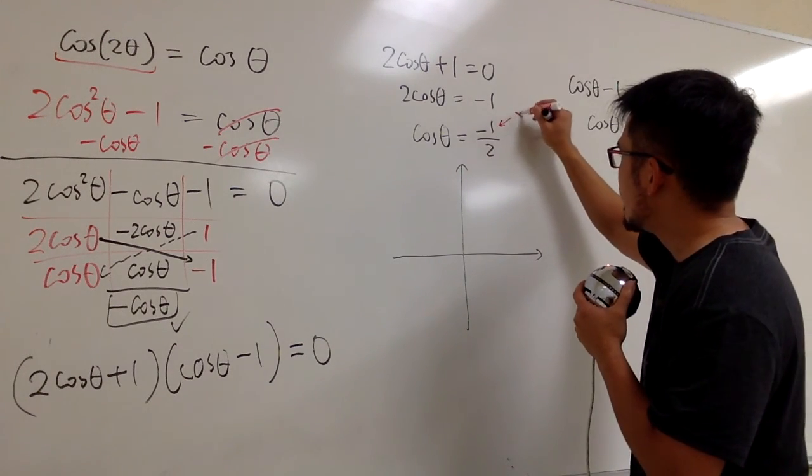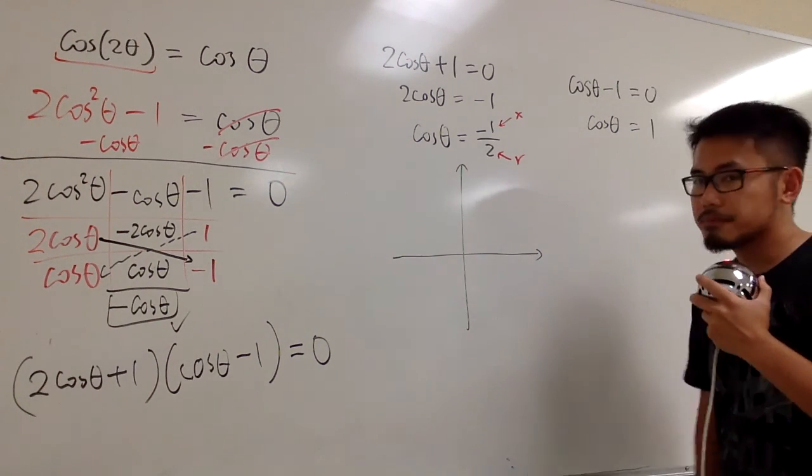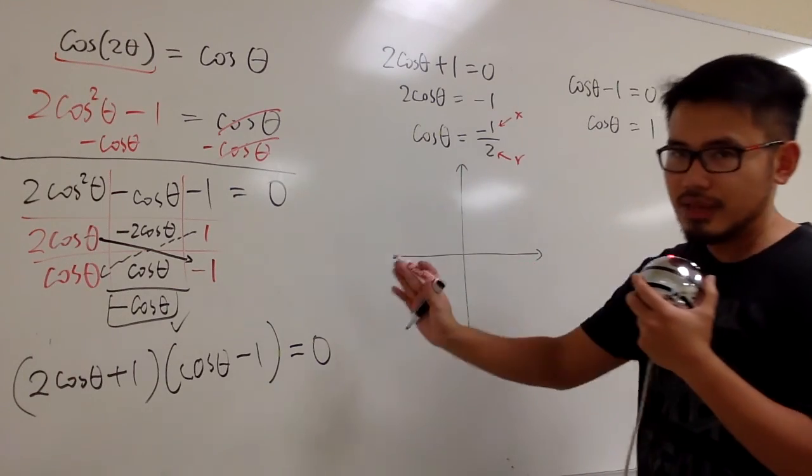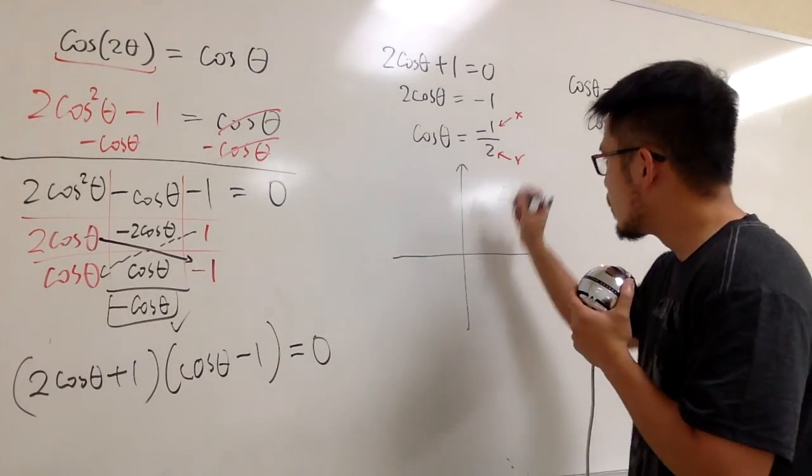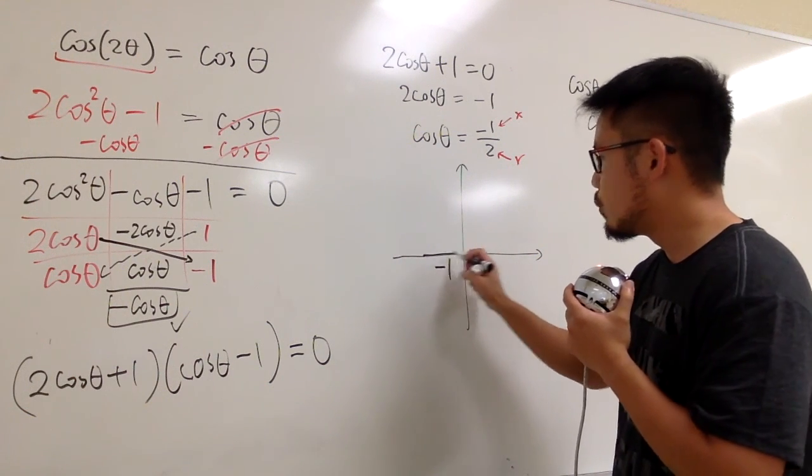Anyways, cosine is what? x over r. So, on the top, we have x value. On the bottom is the hypotenuse of the triangle. When x is negative 1, that means we are on the left-hand side. So, first, we will draw negative 1 like this. Okay? This right here is my negative 1, okay?